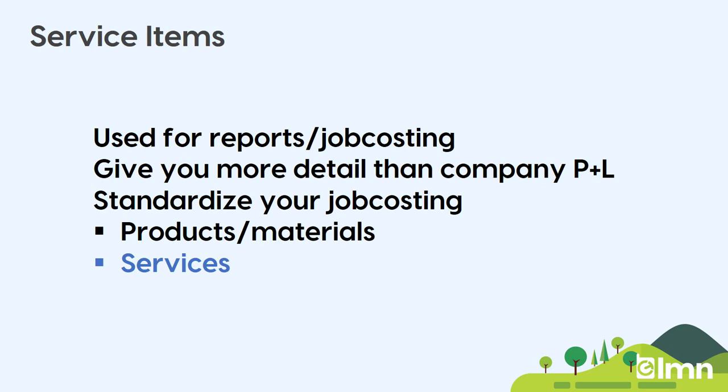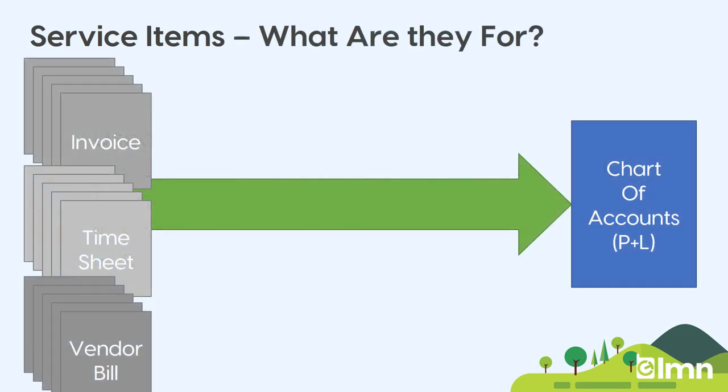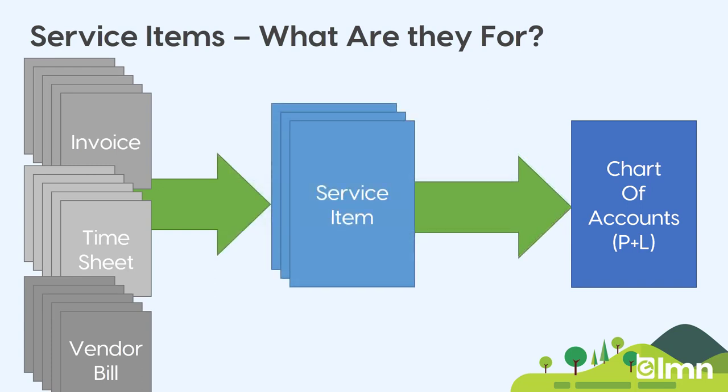Instead, you should think about service items as services or as departments. That's often the right level of detail. We typically recommend setting up service items as departments or types of work so you can analyze how profitable they are. In a traditional company, people enter invoices, timesheets, and vendor bills directly to the chart of accounts, but when you do that you skip service items, which are one of the better reporting features of QuickBooks. Service items actually sit in between the transaction and the chart of accounts — instead of applying an invoice directly to a chart of account, you pick a service item.